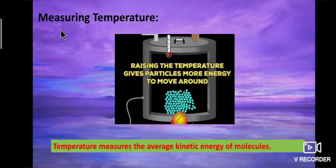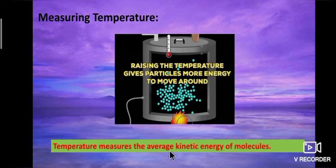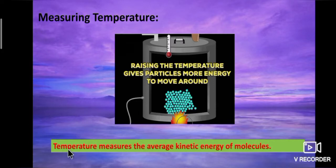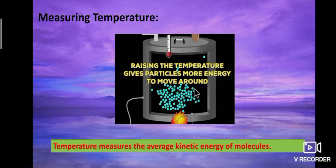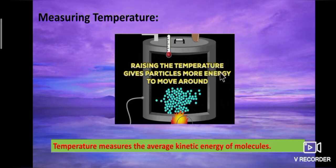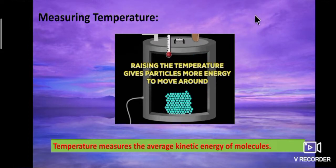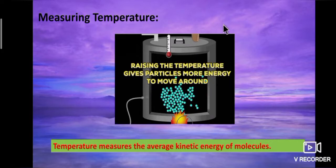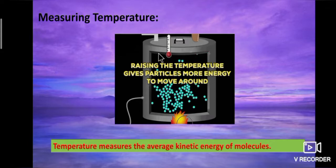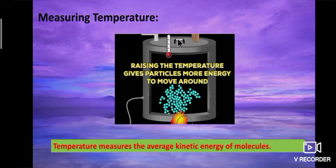Now we will learn about measuring temperature. Temperature measures the average kinetic energy of molecules. At lower temperature, the movement of particles in a substance is slow. At higher temperature, the movement of particles in a molecule is faster.